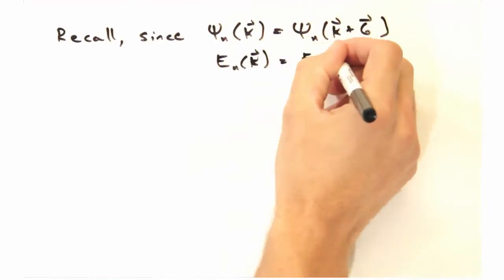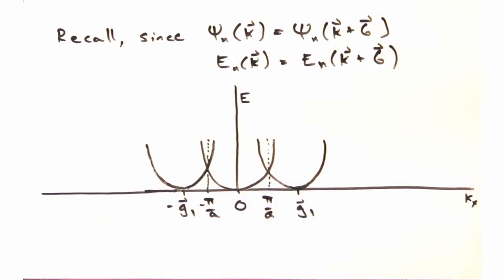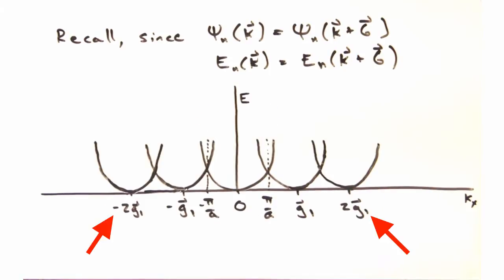As a starting point, just recall the 1D dispersion in the periodic zone scheme. We'll find parabolas with origins at plus and minus 1G that also extend into the first Brillouin zone. And we also find these parabolas at plus and minus 2G1 and so on and so on.